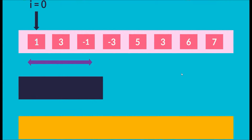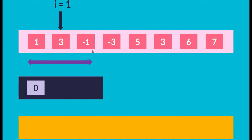Initially i points to index 0 and our first sliding window covers indices 0 to 2: elements [1, 3, -1]. Since the queue is empty, we just push index 0 onto the DQ. We move i to index 1, which points to element 3. We compare 3 with the element at the back of the DQ, which is index 0 (value 1). Since 1 is smaller than 3, it cannot be the maximum of this or any future sliding window, so we pop index 0 out.